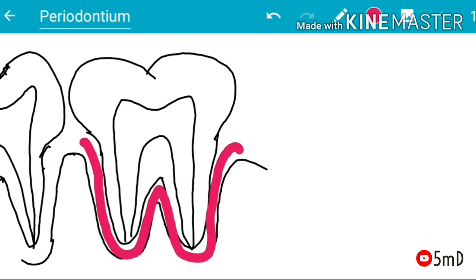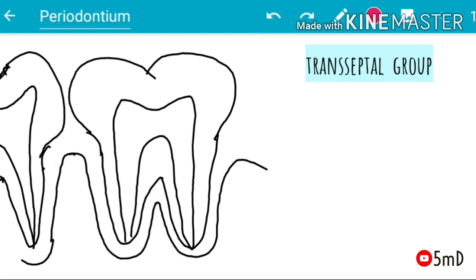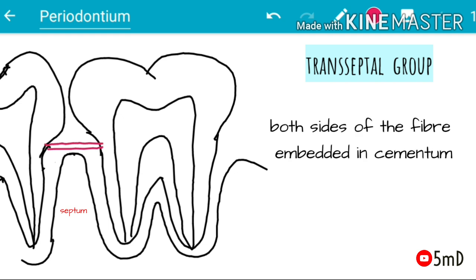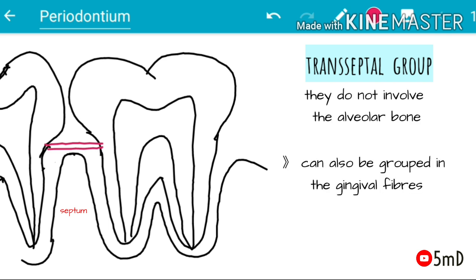The first group is the transseptal group of fibers. They cross the interdental septum from one tooth to another, and are embedded in the cementum of the adjacent teeth.